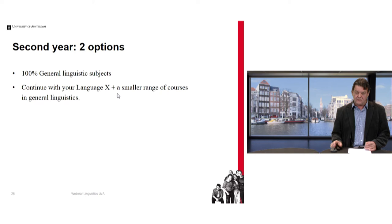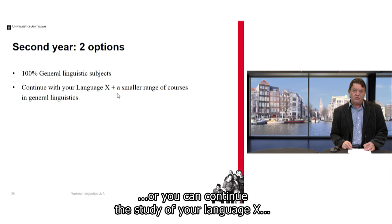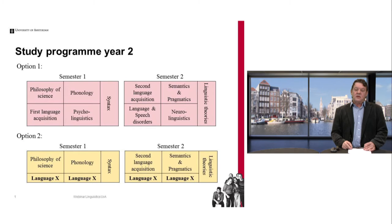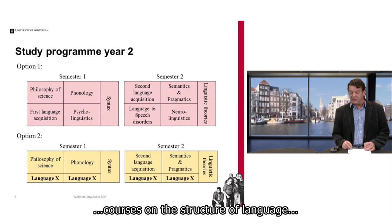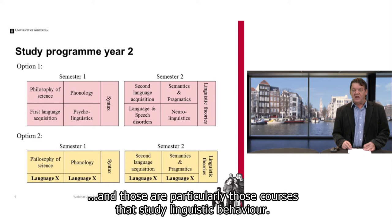When you go to the second year, you have two options. You can either take a 100% linguistics programme with only courses in general linguistics, or you can continue the study of your Language X and take a smaller amount of linguistics courses. In each case you have the same structural courses on the structure of language, but some courses — particularly those studying linguistic behaviour — are dropped if you continue with Language X.